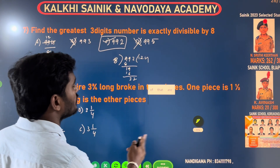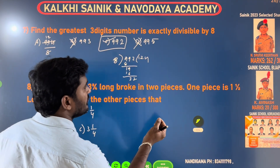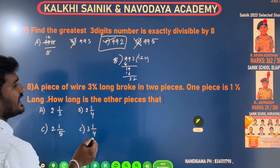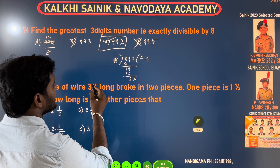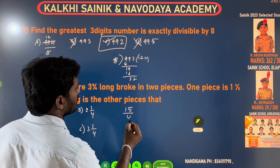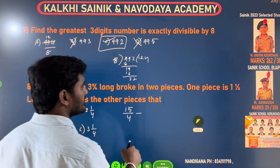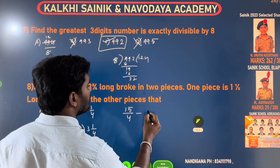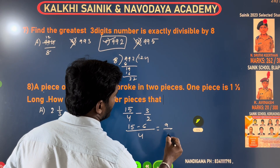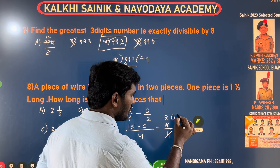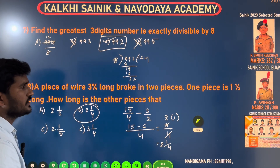A rod is 3 by 4 long, broken into 2 pieces. One piece is 1 and 1/2 long. How long is the other piece? Total length: 3/4. Convert: common denominator 4, so 3/4. One piece is 1½ = 3/2. Convert 3/2 to quarters: 6/4. Other piece = 15/4 − 6/4 = 9/4. Simplifying: 9/4 = 2 remainder 1, so the answer is 2 and 1/4. Option B is the right answer.